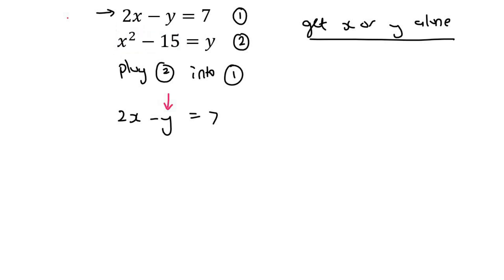So what this will now look like is 2x minus, then in brackets, x squared minus 15 equals 7, and now it's just a case of solving.